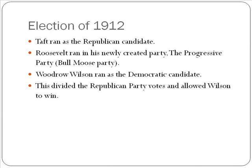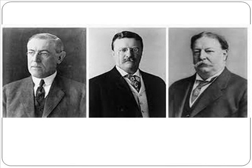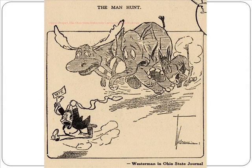Taft easily gets elected in 1908 and becomes the next president. During Taft's years, he continues Roosevelt's reforms but doesn't really push for more, and Roosevelt is really disappointed in this. Roosevelt was so progressive and pushed for so much change that he decides in 1912 that he wants to run for president again. He asks the Republican Party to run him as the presidential candidate instead of Taft, but the Republicans say no and run Taft. Roosevelt then forms his own political party known as the Bull Moose Party — officially called the Progressive Party — with a big bull moose as his symbol.